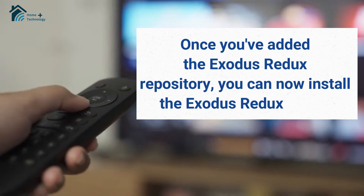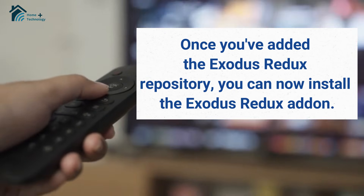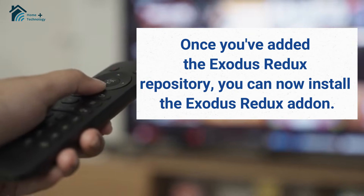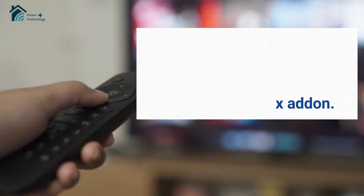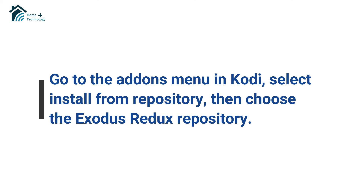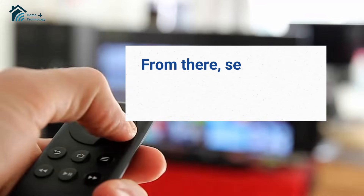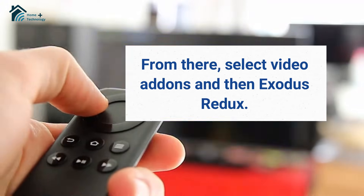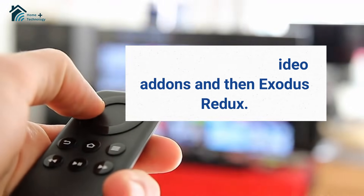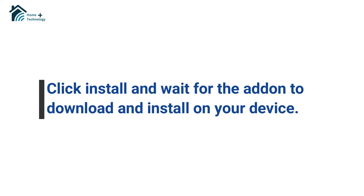Once you've added the Exodus Redux repository, you can now install the Exodus Redux add-on. Go to the Add-ons menu in Kodi, select Install from Repository, then choose the Exodus Redux repository. From there, select Video Add-ons and then Exodus Redux. Click Install and wait for the add-on to download and install on your device.